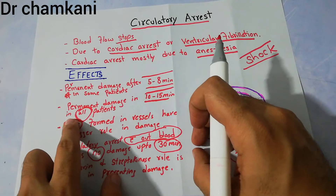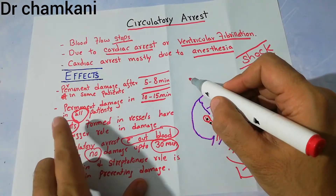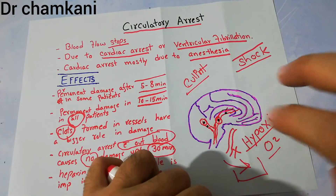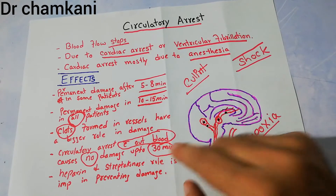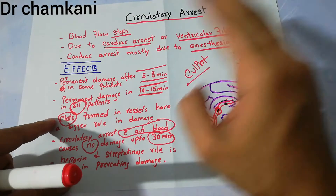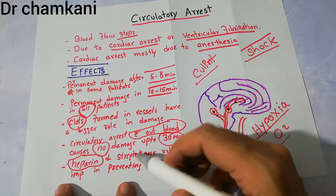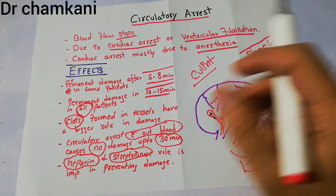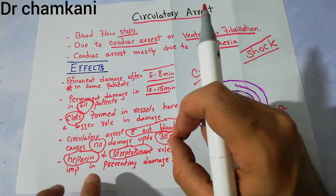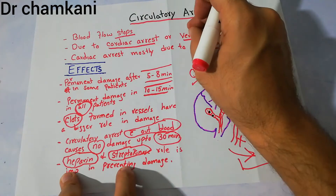This proves that blood clots formed in small vessels during circulatory arrest are the culprit. Similarly, if the experimental animal is heparinized or given streptokinase before inducing circulatory arrest — heparin not allowing clots to form, and streptokinase breaking down any clots formed — this also prevents permanent brain damage, even in the presence of blood and circulatory arrest.